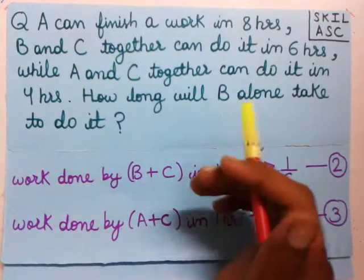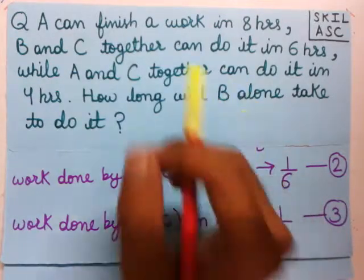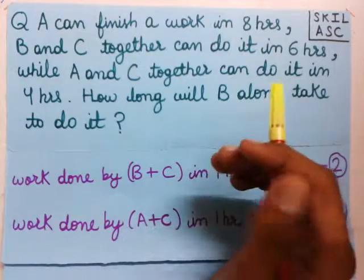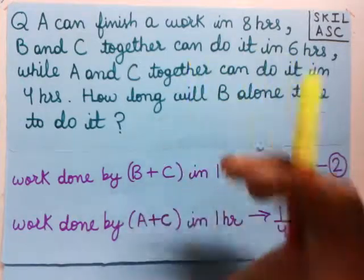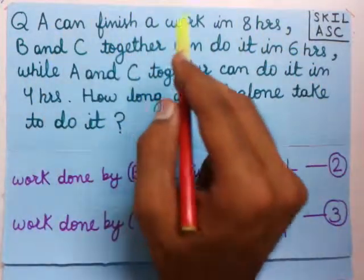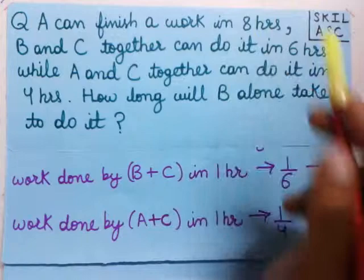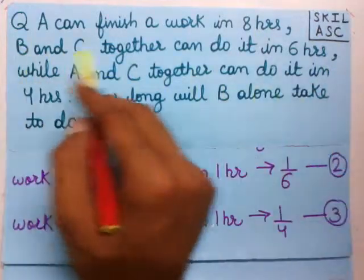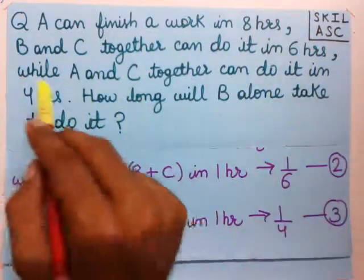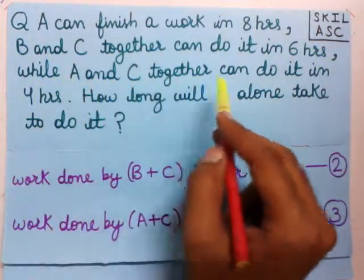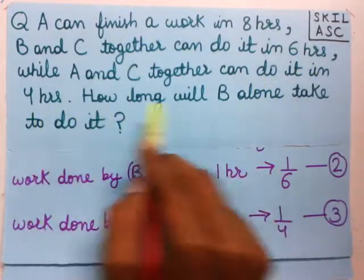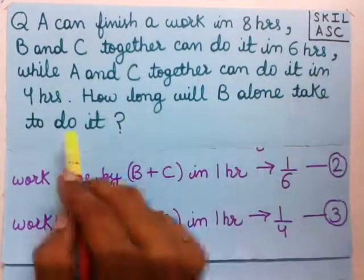Welcome to learn about time and work. We are going to learn about one of the examples from time and work. The question is: A can finish a work in 8 hours, B and C together can do it in 6 hours, and A and C together can do it in 4 hours. How long will B alone take to do it?